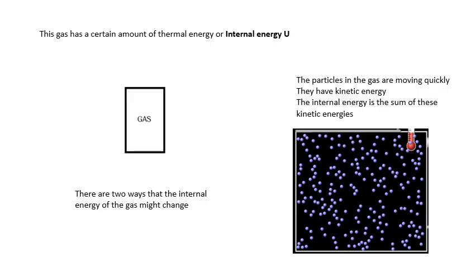It's called its internal energy, the sum of the kinetic energies of its particles. Now there are two ways that the internal energy of a gas might change. The first way is if it gains or loses heat. The second way is if it does work or we do work to it.